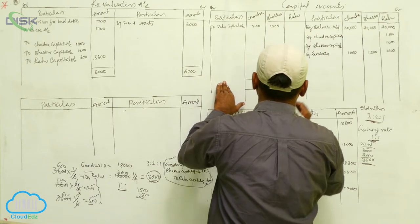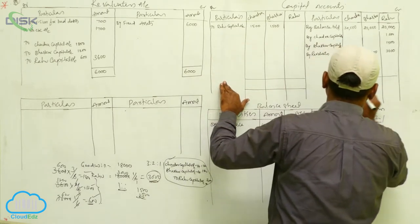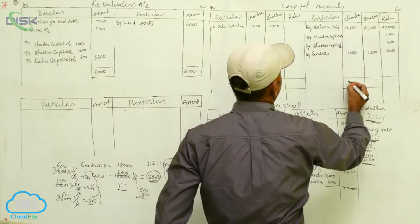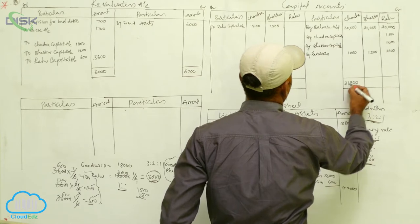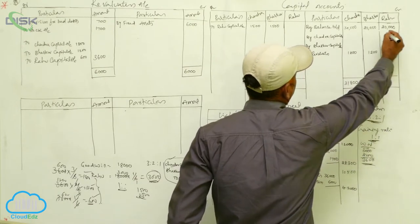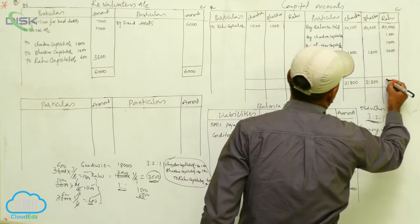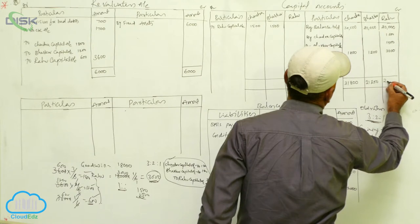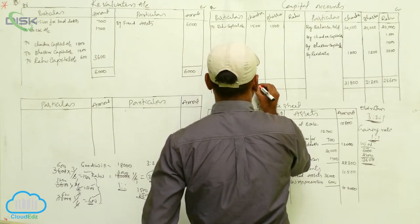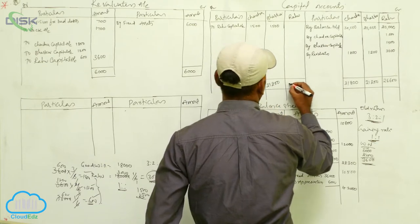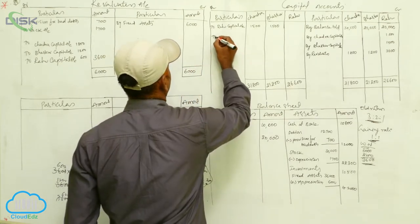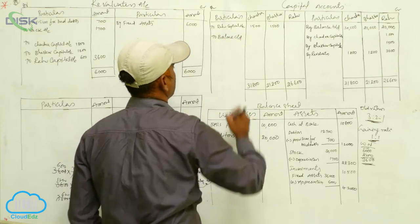Now we ascertain the balances of capital accounts. Chandra capital: 30,000 plus 1,800 equals 31,800. Baskar capital: 20,000 plus 1,200 equals 21,200. Rahu capital: 20,000 plus 6,000 plus 600 equals 26,600. So we have: Chandra 31,800, Baskar 21,200, and Rahu 26,600.